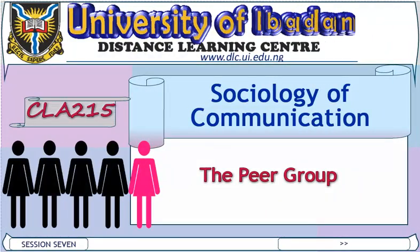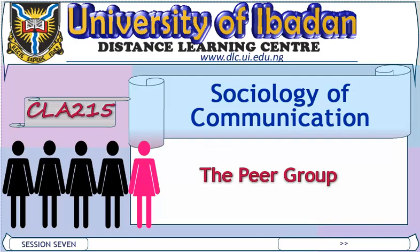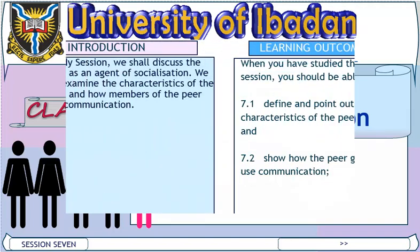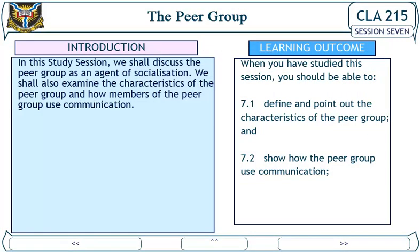Welcome to CLA 215 Section 7: The Peer Group. In this study section, we shall discuss the peer group as an agent of socialization. We shall also examine the characteristics of peer group and how members of the peer group use communication.